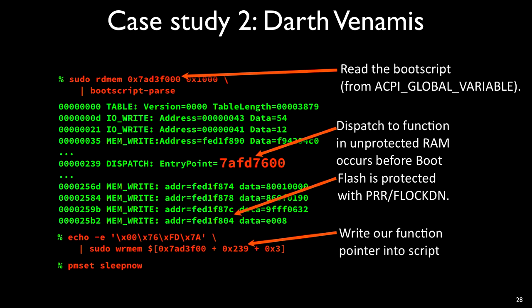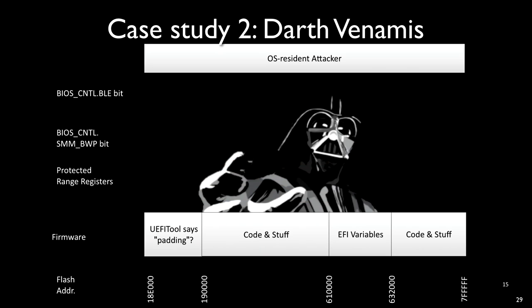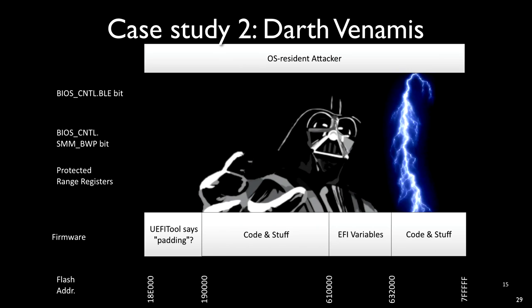When the system goes into sleep — which is a user command — the system wakes back up, and those protected range registers are no longer protected. This allows the OS-resident attacker to write pretty much anywhere in the firmware, which allows it to take control of the machine from that first instruction and circumvent any other chain of trust.